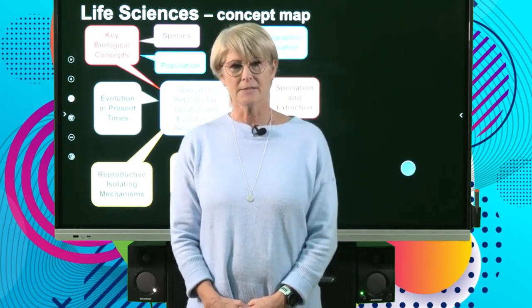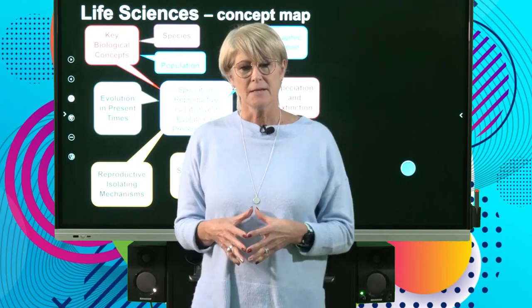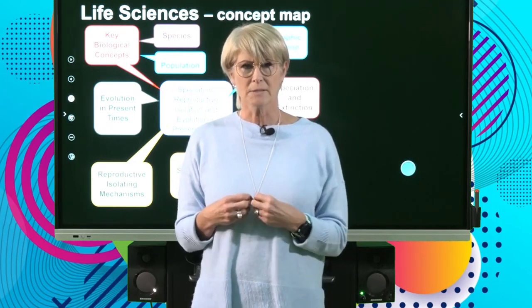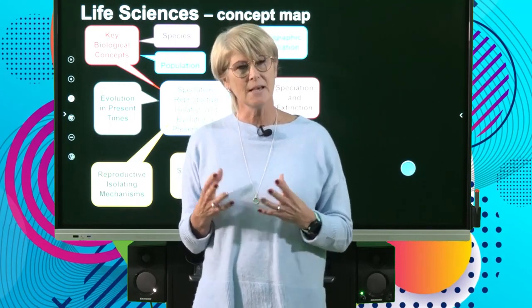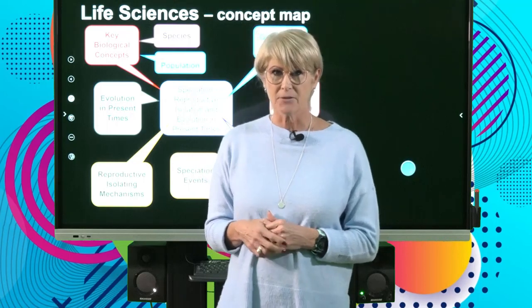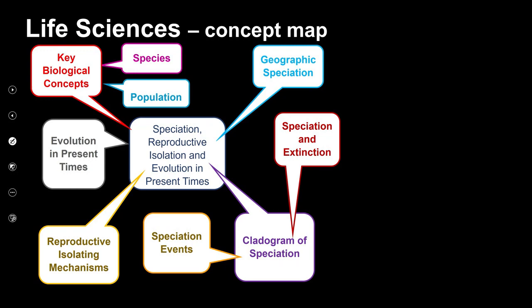Welcome back. We're now going to look at some examples of where speciation has taken place, and we're going to look at how we track these or determine how speciation has occurred by looking at a cladogram. We've completed geographic speciation — how it actually occurs due to a physical barrier — and now we're going to look at the cladogram and the speciation events, and then the effect that speciation and extinction has on biodiversity.